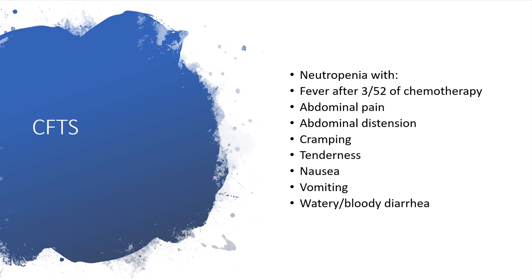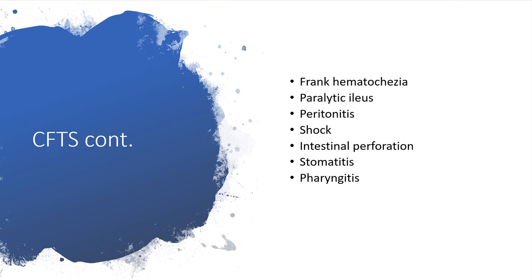The clinical features include neutropenia, and fever after about three weeks of chemotherapy. When there is ulceration there will be pain, and with inflammatory cells and edema, there will be abdominal distension — possibly due to hemorrhage. There will also be cramping, tenderness on palpation, nausea, vomiting, and watery and bloody diarrhea. Hematochezia is possible due to ulceration, and paralytic ileus can occur when massive diarrhea leads to potassium loss.